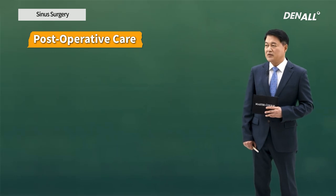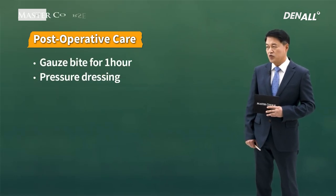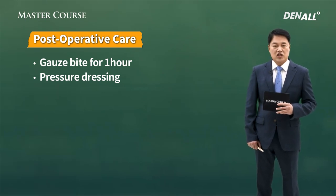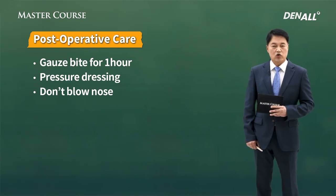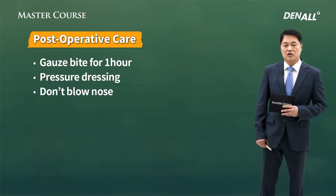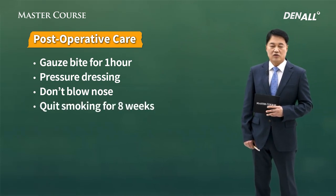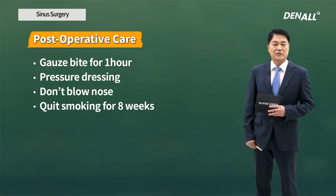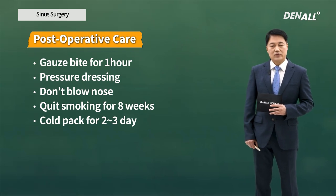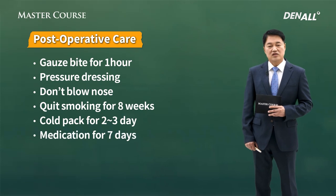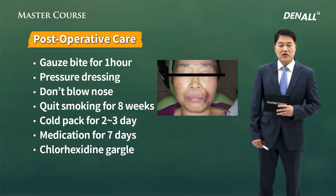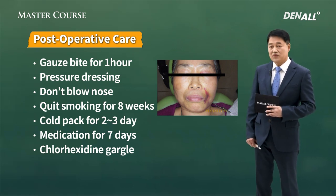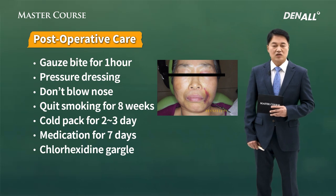After surgery, there are precautions. Gauze bite should be done and pressure dressing is necessary. After sinus graft, for one month, tell the patient not to blow their nose too hard — this prevents the bone graft from collapsing due to severe pressure. Recommend abstaining from smoking for eight weeks. To prevent excessive swelling, have the patient use a cold pack for two to three days. To prevent inflammation, provide medication for seven days, and chlorhexidine gargle helps. After surgery there can be bruising and a lot of swelling — you need to tell this to your patient early. After sinus graft, inform the patient that bruising and swelling can occur.